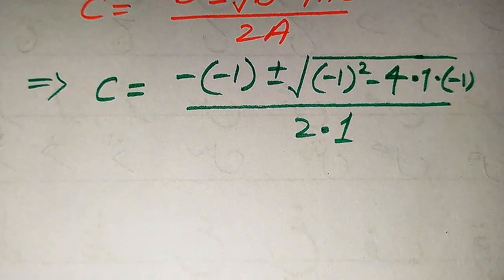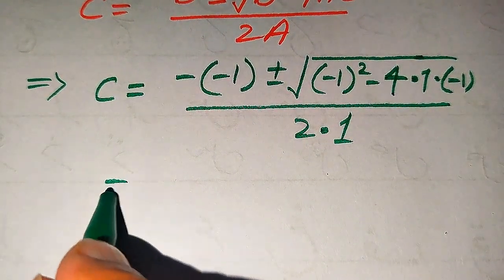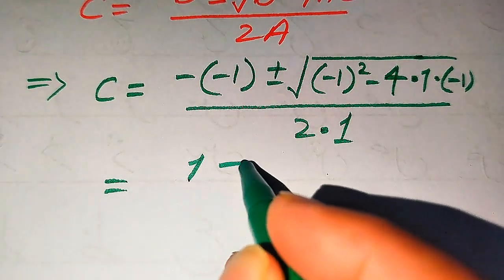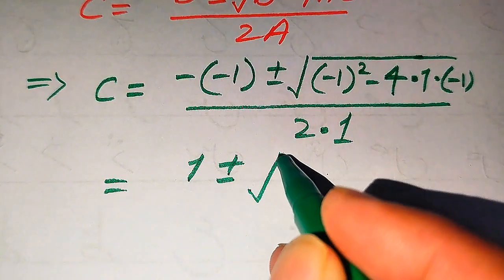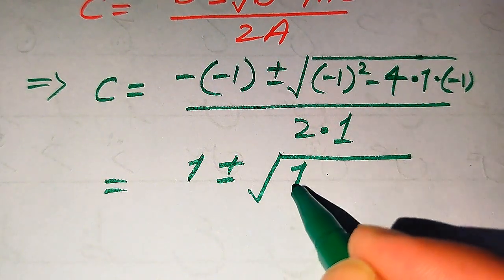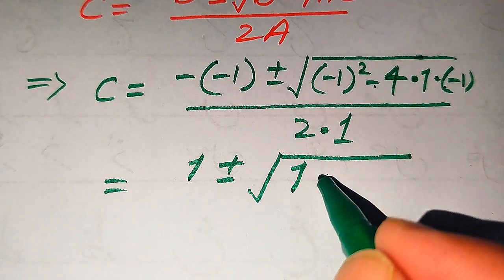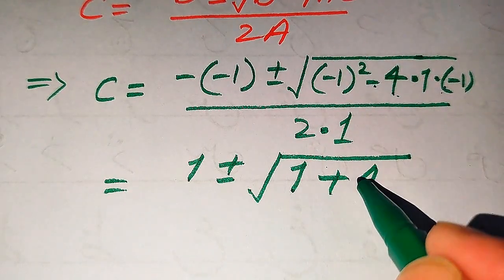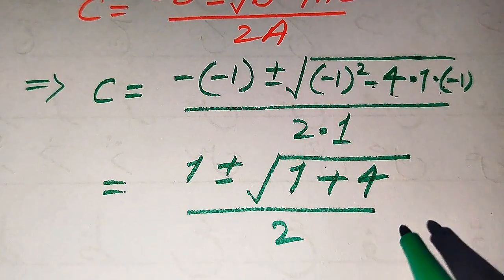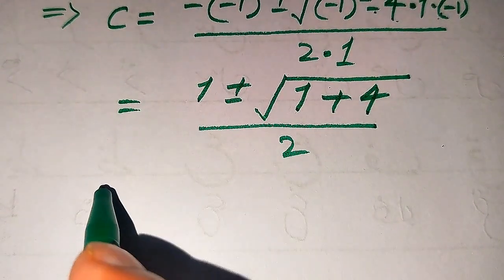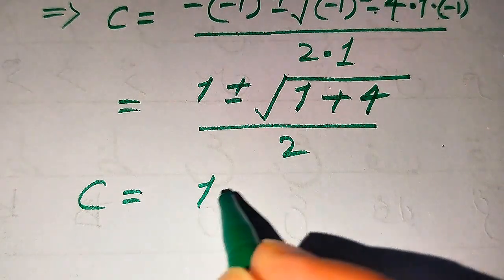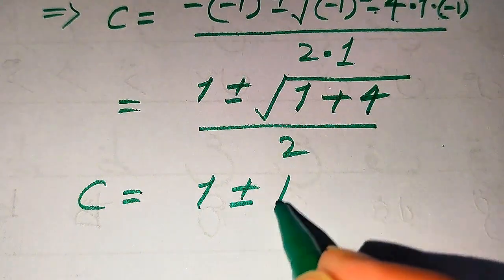Simplifying further: minus times minus becomes plus 1, and inside the square root, minus 1 squared becomes plus 1, and minus times minus becomes plus, so 4 times 1 times 1 becomes plus 4, and the denominator is 2 times 1.